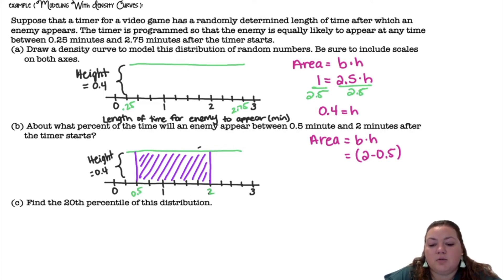Area of a rectangle is base times height. So the base is 2 minus 0.5 times the height of 0.4. So 1.5 times 0.4 is 0.6 or 60%.